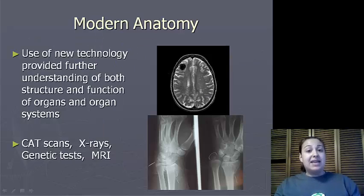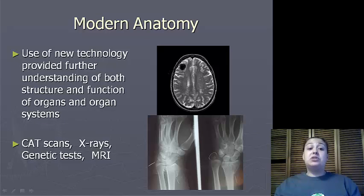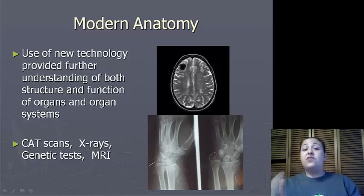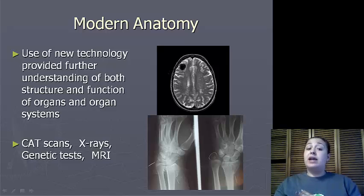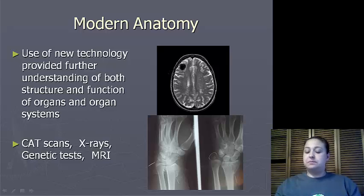Modern anatomy has come a very long way, and we have been able to use new technology to provide further understanding of both structure and function of organs and organ systems. We use things such as CAT scans, X-rays, genetic testing, and MRIs to actually find out more about structure and function.